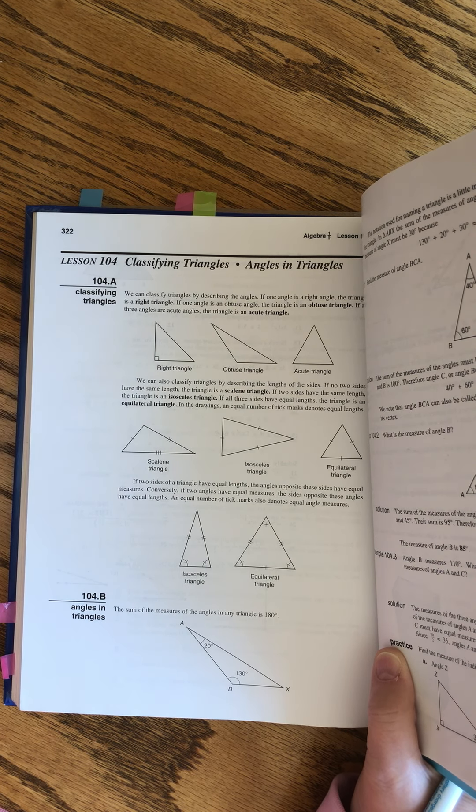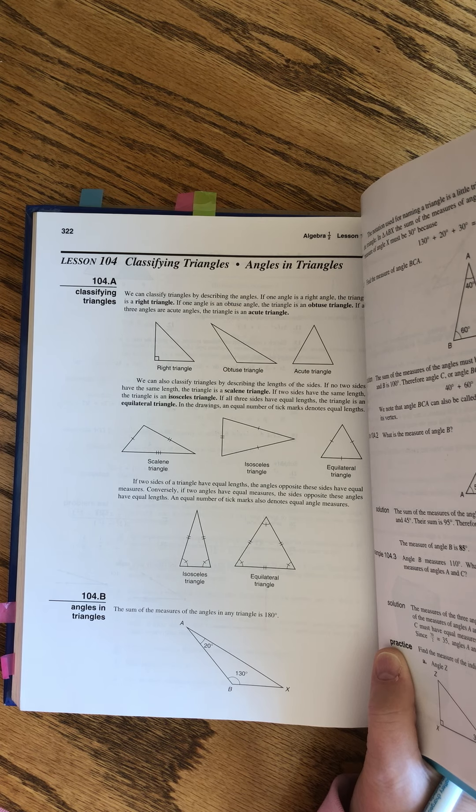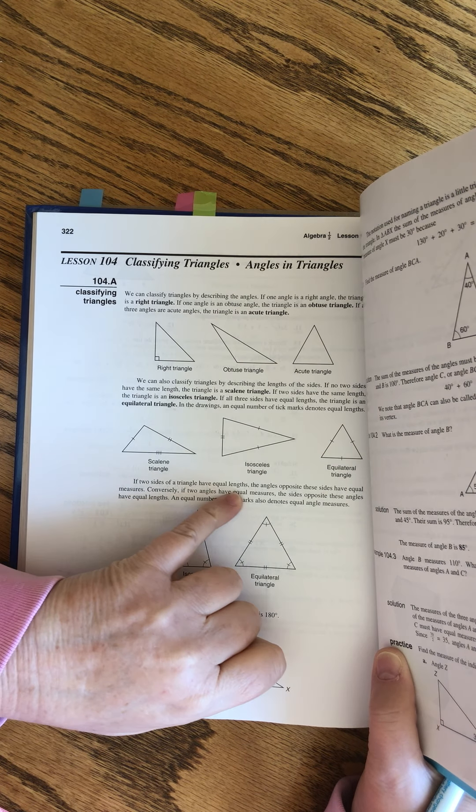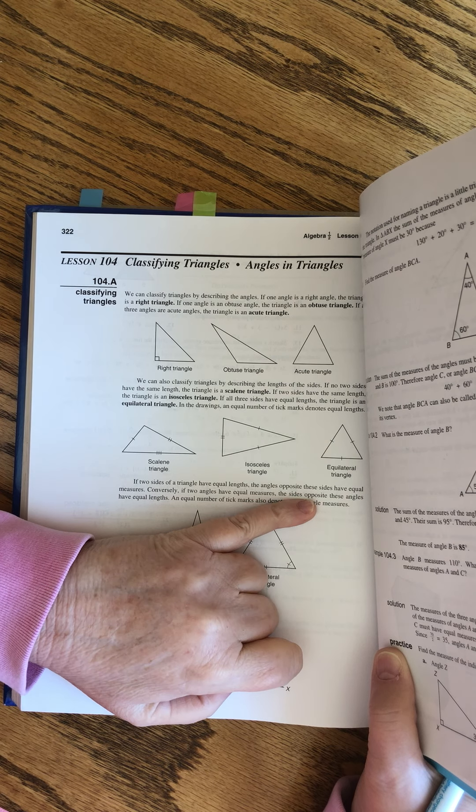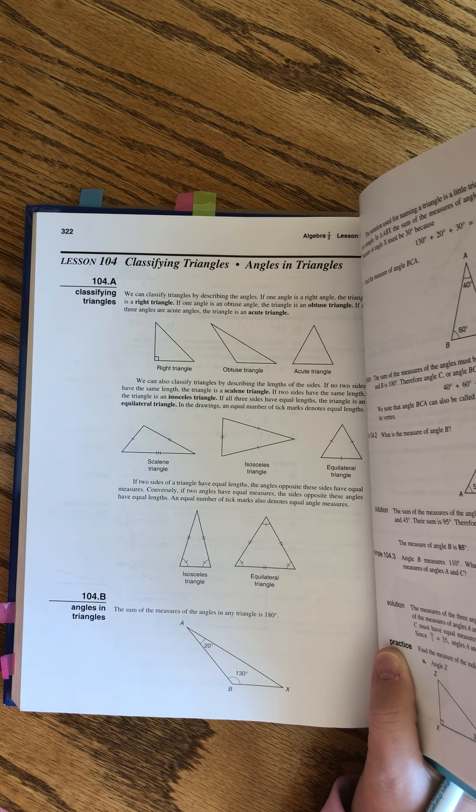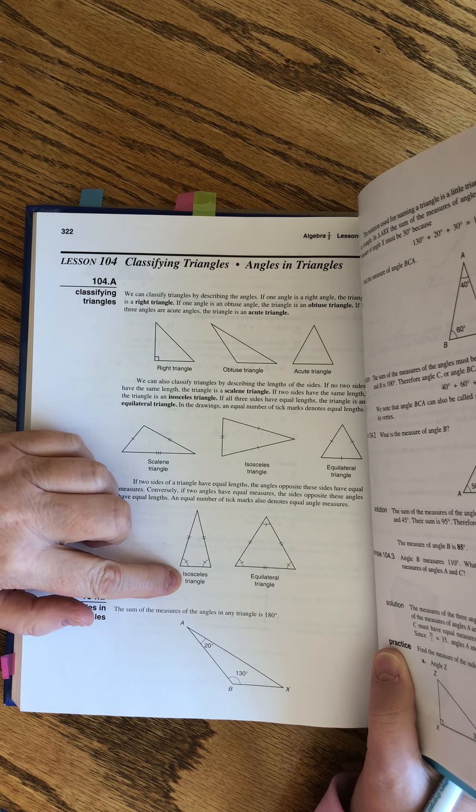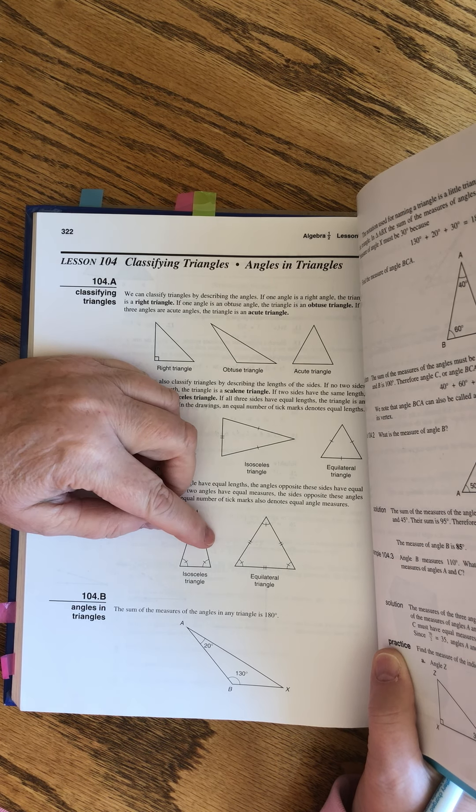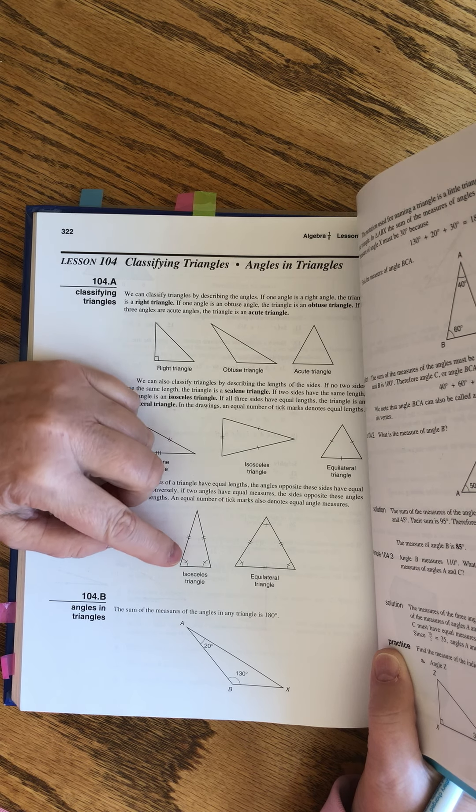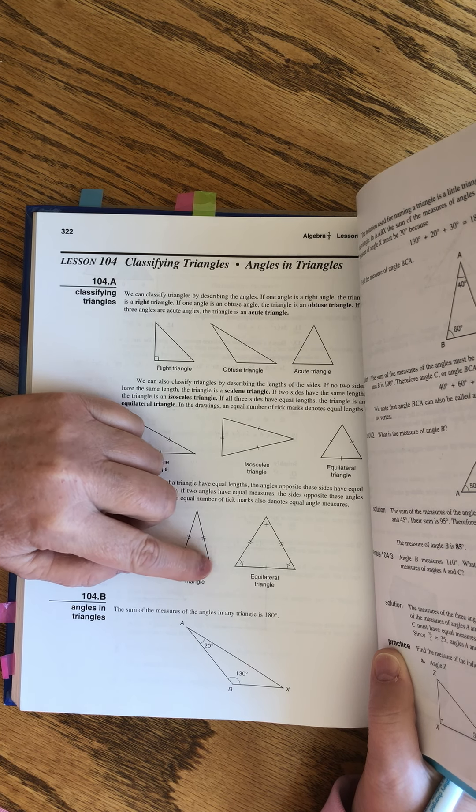If two sides of a triangle have equal lengths, the angles opposite those sides have equal measures. Let's look at that in an isosceles triangle first - that's where it's easiest to see. Isosceles has two sides that match and a third side that doesn't. These two angles are going to be the same.